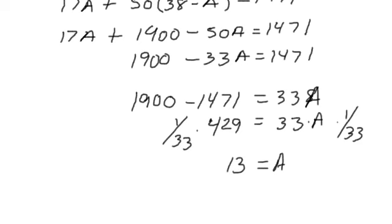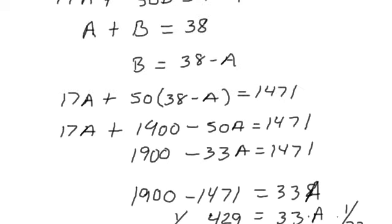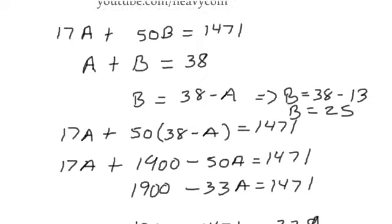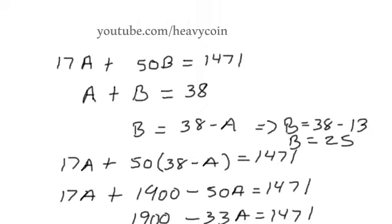We've got 429 divided by 33, and that leaves us with 13. So we're going to be able to buy 13 hooks of type A. Now let's find what B is. 38 minus 13, that will give us 25. So B is 25 and A is 13.